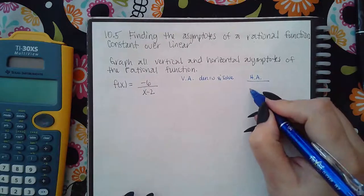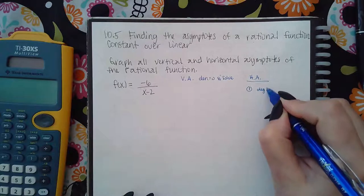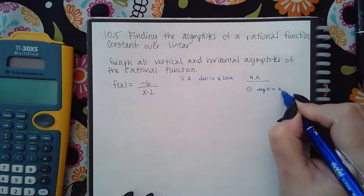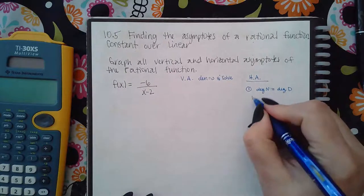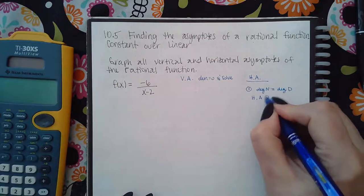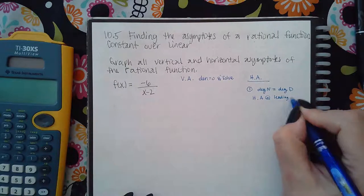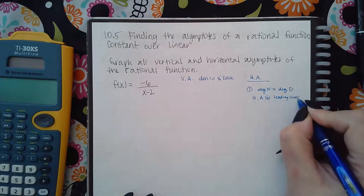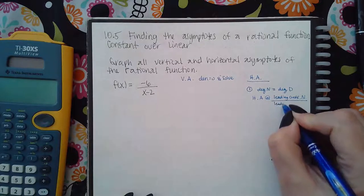Case one happens when the degree of the numerator equals the degree of the denominator. And if that happens, then the horizontal asymptote is at the leading coefficient of the numerator over the leading coefficient of the denominator.